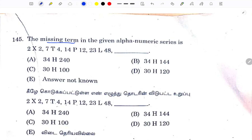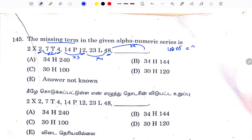The missing term: 2, 4, 12, 48... The pattern is 1×2, 2×3 (=6? no), multiply by 2, then ×3, then ×4. So 48 × 5 = 240. 240 is the answer.